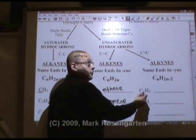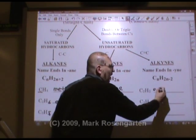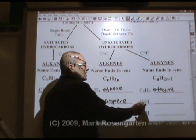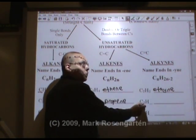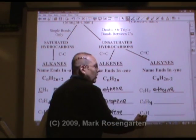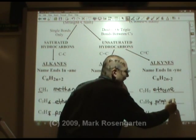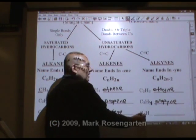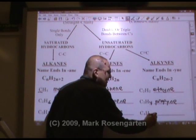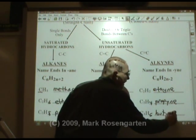Double two is four, subtract two is two — C2H2, this is called ethyne. C3: double three is six, subtract two is four — C3H4, this is called propyne. Double four is eight, subtract two is six — C4H6, this is called butyne.